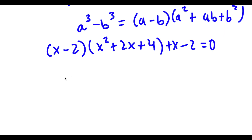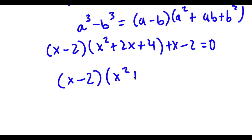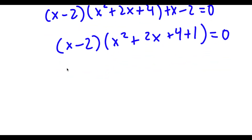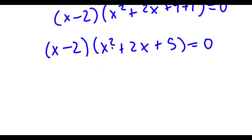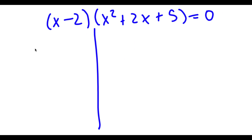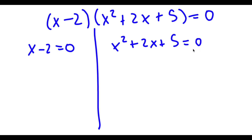Factoring out x minus 2, I get x minus 2 times x squared plus 2x plus 4 plus 1 equals 0, which is the same as x minus 2 times x squared plus 2x plus 5 equals 0. To solve this, I have two equations: x minus 2 equals 0, and x squared plus 2x plus 5 equals 0.